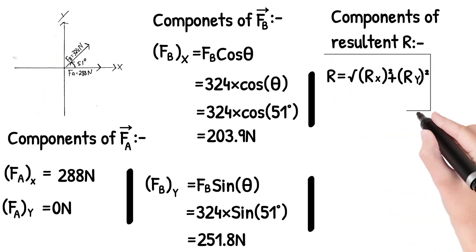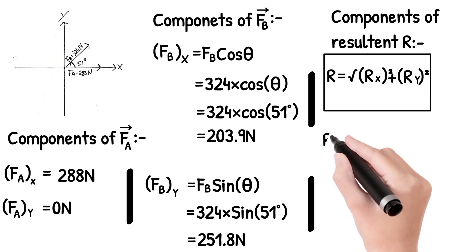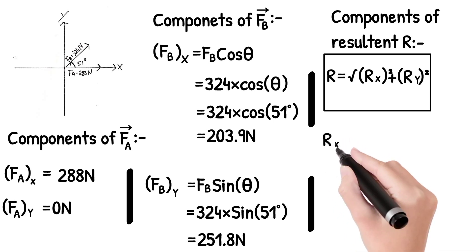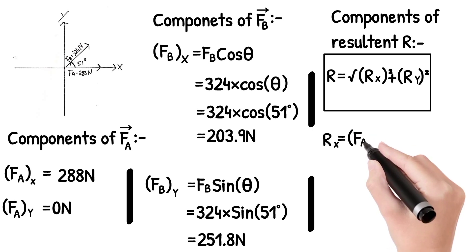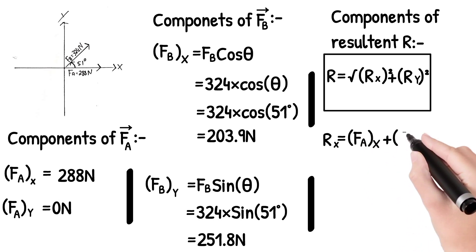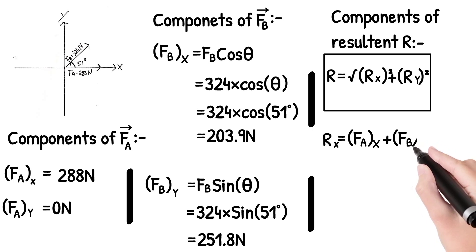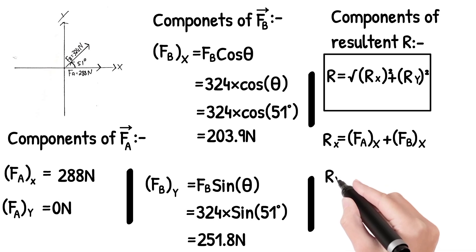R is equal to the root of Rx squared plus Ry squared. That's the equation for the magnitude. This gives us Rx and Ry. Rx is the sum of Fa of x plus Fb of x. Let's compute the resultant vector from these components.